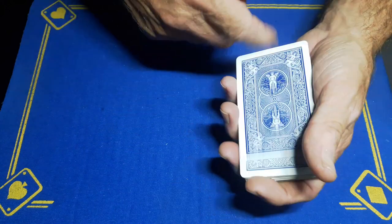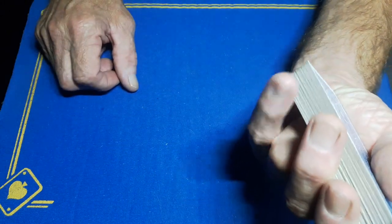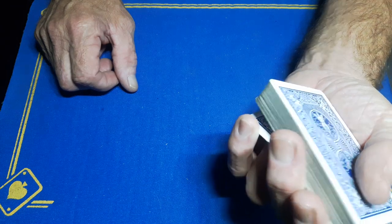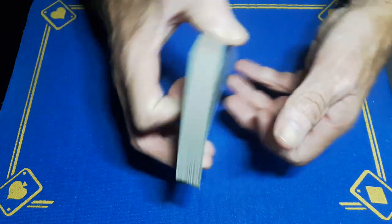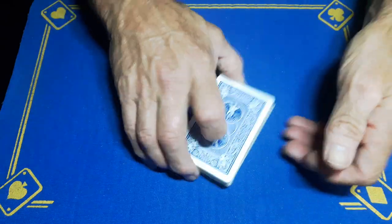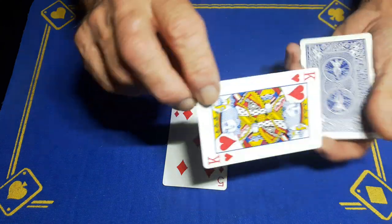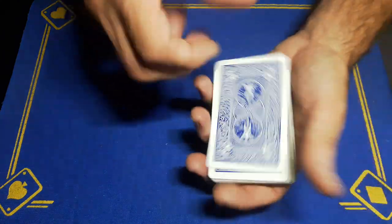way to do that: little pinky pull down on the bottom card, turn it into a thumb break, and then cut that card to the top. So you will have an indifferent card on top of their card. You can